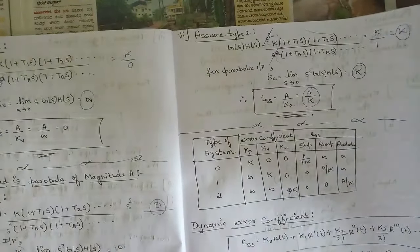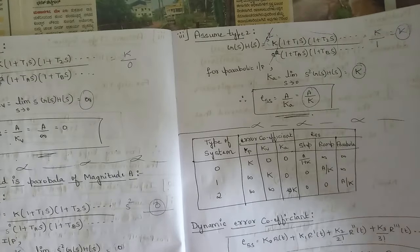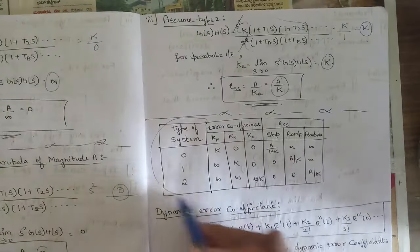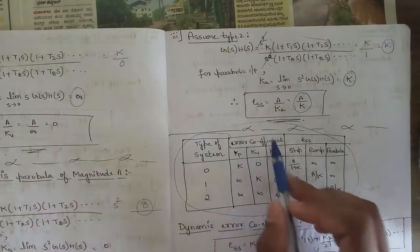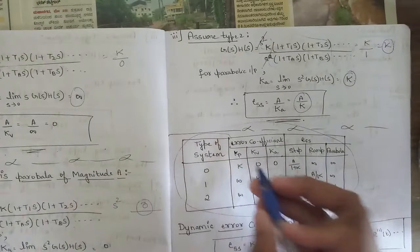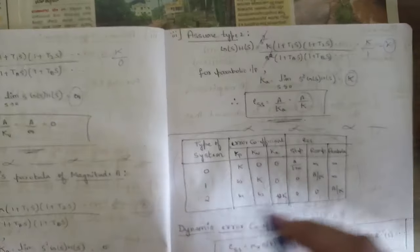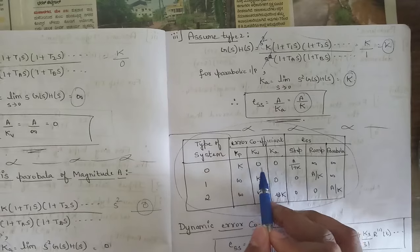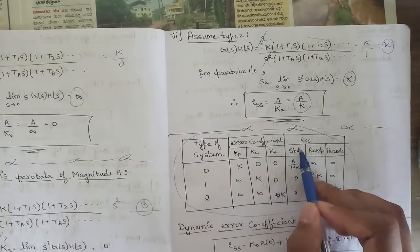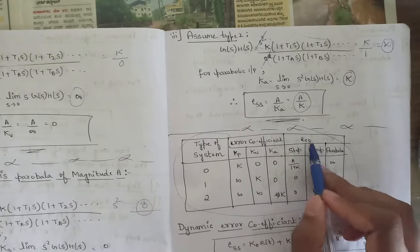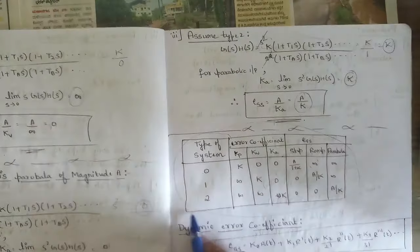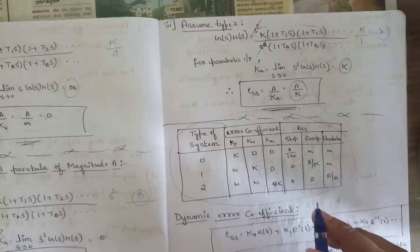These were the three cases: for step, ramp, and parabolic inputs, we derived the steady state error expressions for Type 0, Type 1, and Type 2 systems. A summary table has been created with columns for type of system, error coefficients (kp, kv, ka), and steady state errors for each input. For Type 0: kp = k, kv = 0, ka = 0; step error = a/(1+k), ramp error = infinity, parabolic error = infinity. Please note this down.